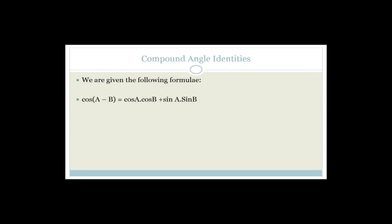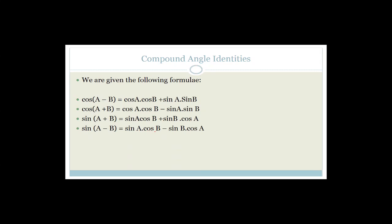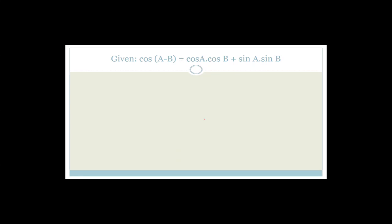You are given: cos(A − B) = cosA cosB + sinA sinB; cos(A + B) = cosA cosB − sinA sinB; and sin(A + B) = sinA cosB + sinB cosA. They like to give you cos(A − B) and ask you to derive cos(A + B). We're going to go through it step by step.